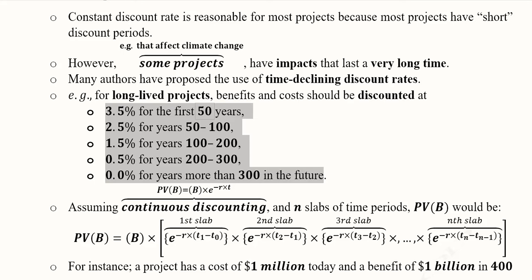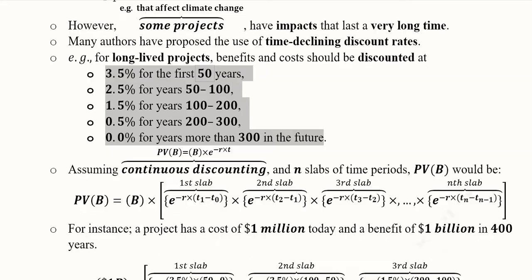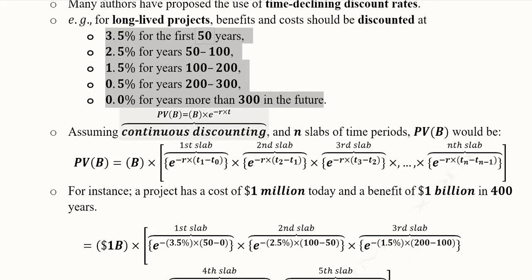In this case, continuous discounting is more suitable instead of discrete discounting where we use each time period separately. Here we will not do this because we have a time span given instead of each year.